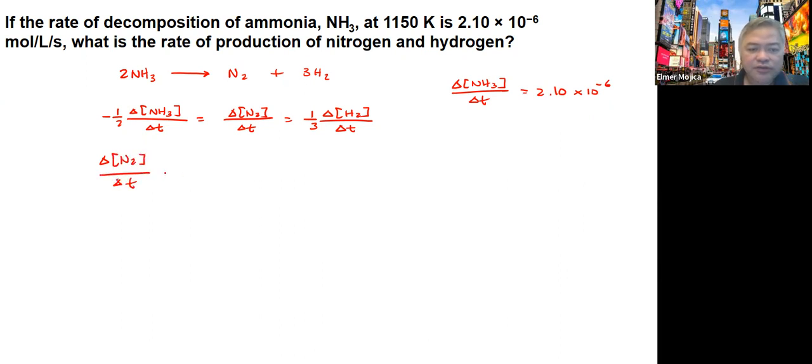Now remember the sign here is just telling us that it is a reactant, so we can put the 2.1 times 10 to the negative 6. In doing that we're going to get around 1.05 times 10 to the negative 6. So that is for the nitrogen.